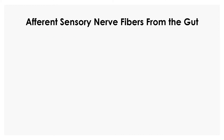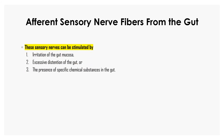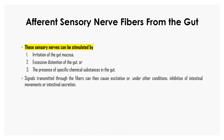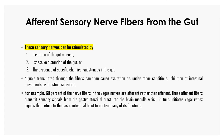Next is afferent sensory nerve fibers from the gut. These sensory nerves can be stimulated by irritation of the gut mucosa, excessive distension of the gut, or the presence of specific chemical substances in the gut. Signals transmitted through these fibers can cause excitation or inhibition of intestinal movement or intestinal secretions. For example, 80% of the nerve fibers in the vagus nerves are afferent rather than efferent. These afferent fibers transmit sensory signals from the GI tract into the brain medulla, which in turn initiates vagal reflex signals that return to the GI tract to control many of its functions.